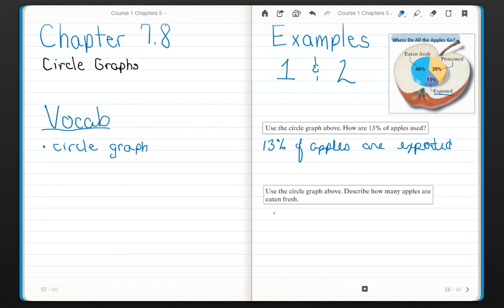Example 2: Using the circle graph above, how many apples are eaten fresh? I can see here is eaten fresh, and it is 48%. So 48% of apples are eaten fresh.